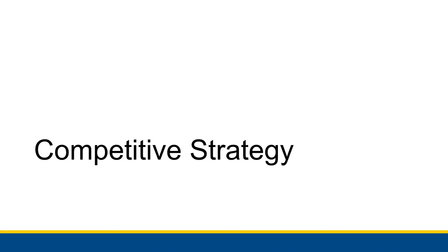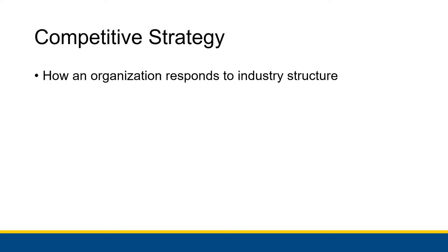In the last video, we talked about industry structure and we used the five forces model to analyze the state of the current industry and maybe your place in that industry if you're running some sort of organization. You use that model in order to tell what areas you're threatened in versus what areas you don't have to worry about as much. From all of that information, what we're then going to do is make a competitive strategy that will motivate how we conduct business in that industry. A competitive strategy is how an organization responds to industry structure.